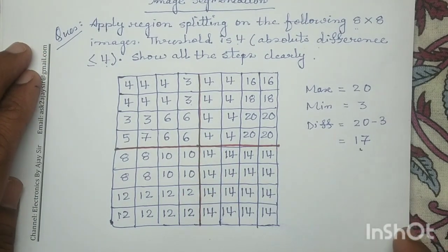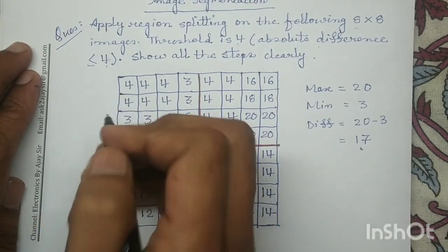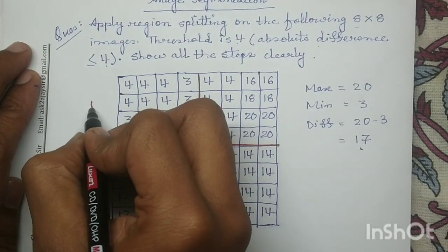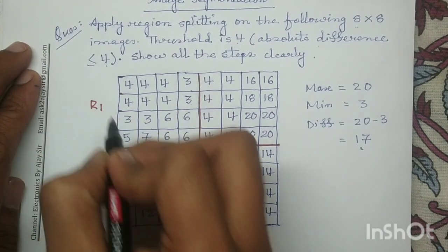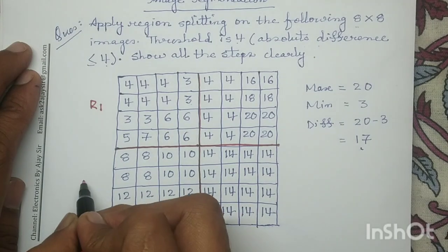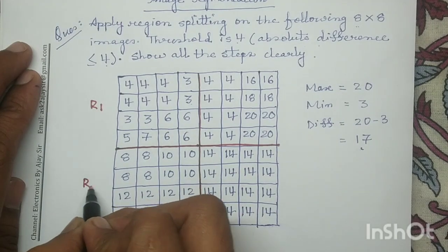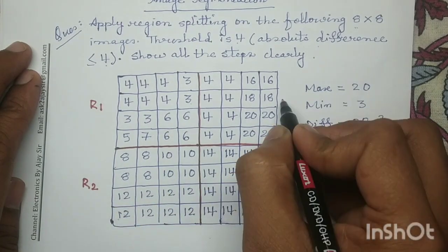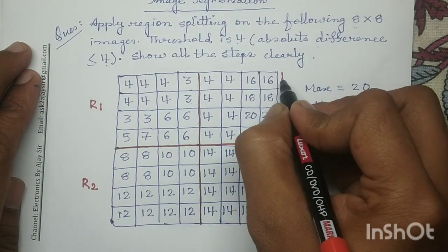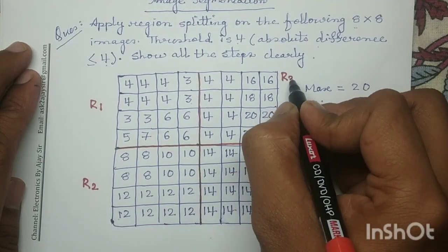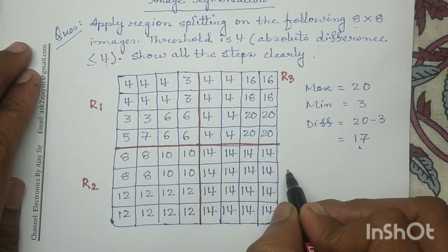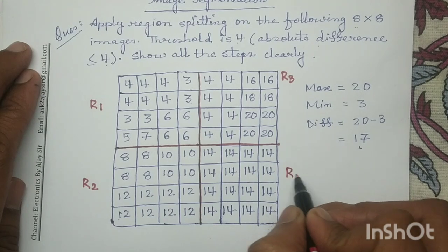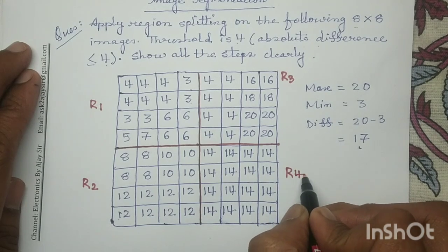Let me name these regions. The first region is R1, the second region is R2, the third region is R3, and the fourth region is R4.